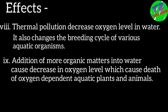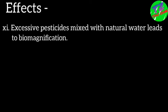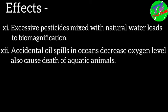Inorganic pollutants like phosphorus cause unnecessary algal blooms called eutrophication. Excessive pesticides mixed with natural water leads to biomagnification. Accidental oil spills in oceans decrease oxygen levels and also cause death of aquatic animals.